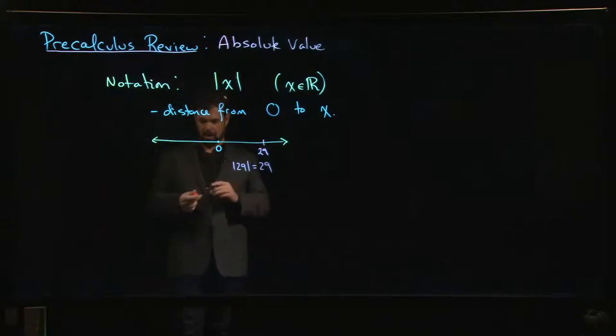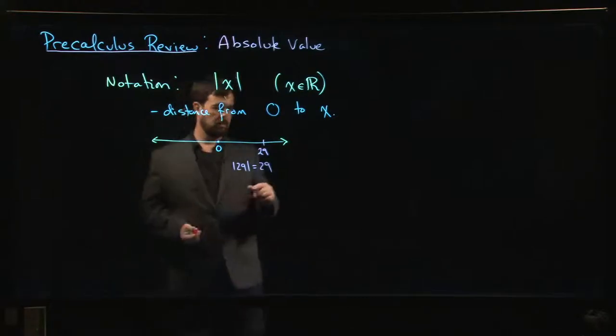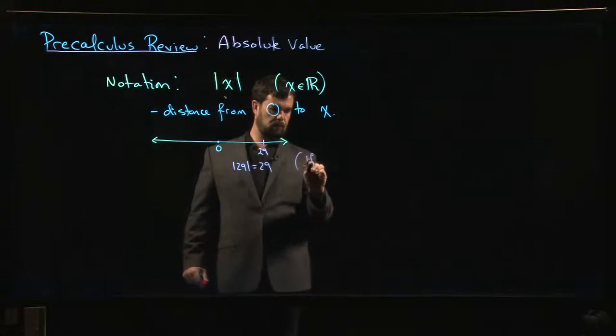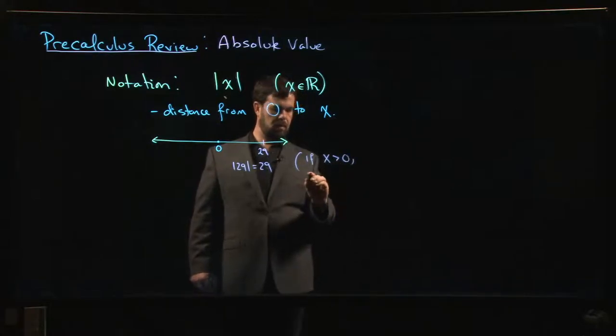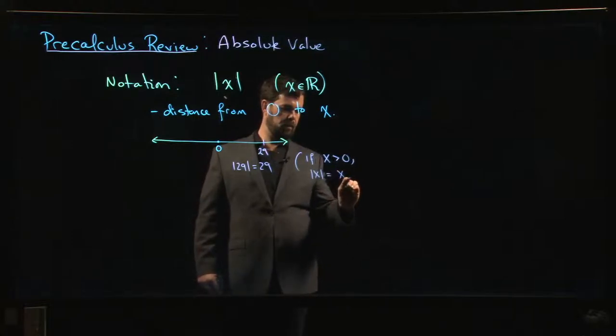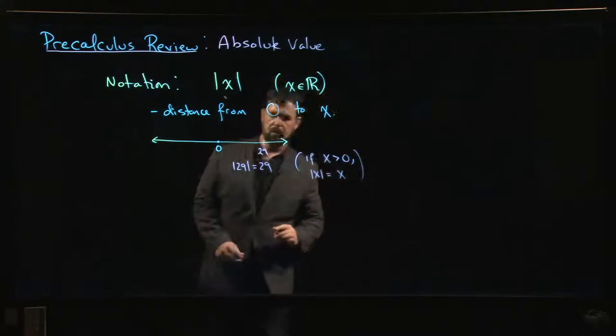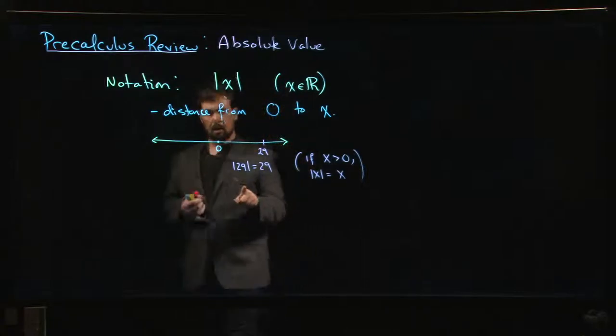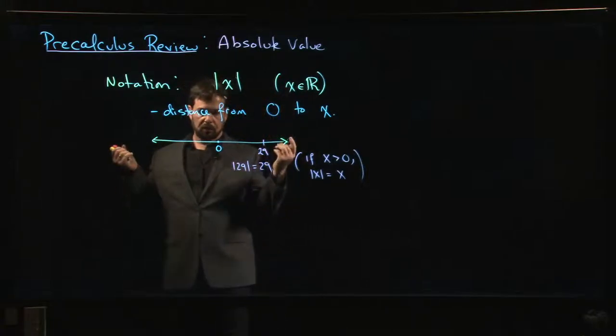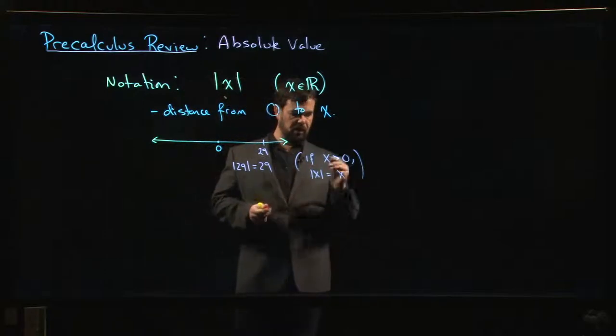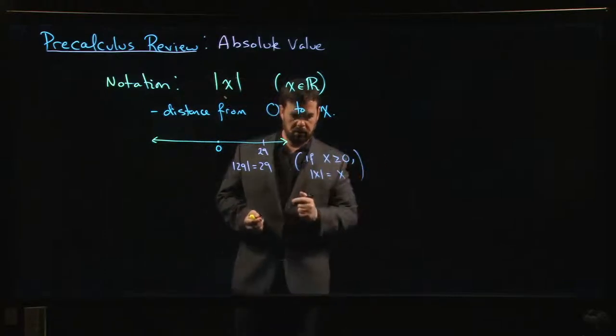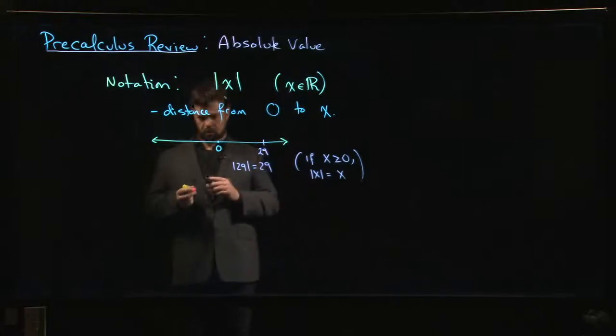Fair enough. And in fact, in general, if x is bigger than 0, then the absolute value of x is just x. Actually, we can do one better. What's the distance from 0 to 0? Well, 0 is a distance of 0 from itself. Any number is a distance of 0 from itself. So we can actually say that if x is bigger than or equal to 0, the absolute value of x is just x.